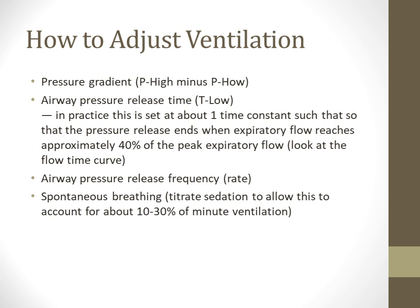Take P high minus P low — that's also your Delta P. Your airway pressure release time is also your expiratory phase or T low. Keep it at one set time so it ends when flow reaches about 40%. You can use the flow-time curve on the ventilator to titrate it. Set your rate, and you can include spontaneous breathing as part of your ventilation limit. The main goal is to keep pH above 7.2 and PaCO2 below 60.